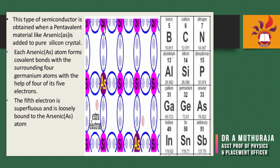The fifth electron is superfluous and is loosely bound to the arsenic atom. Here I am showing arsenic clearly in the structure diagram. Besides arsenic, there are various other elements that can be used for this purpose.